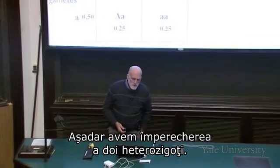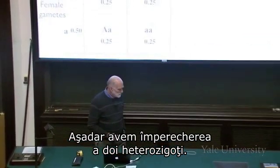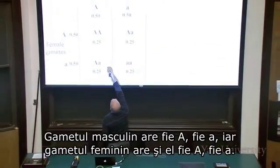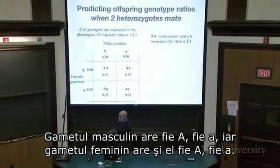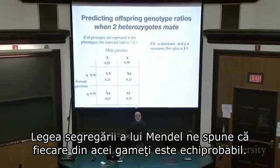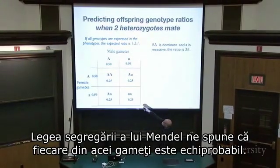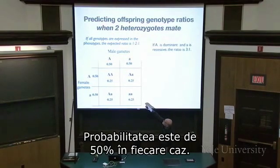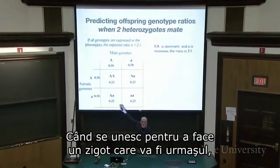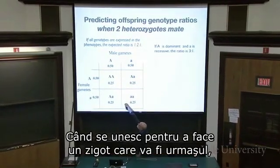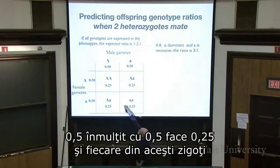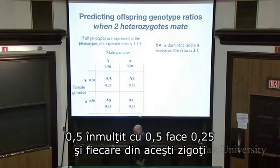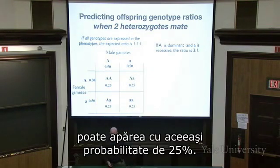If you have two heterozygotes crossing with each other, the male gametes have either big A or little a, and the female gametes have either big A or little a. Mendel's law of segregation tells us those gametes are equally likely — 50% probability in each case. When they come together to make a zygote, we multiply the probabilities: 0.5 times 0.5 gives us 0.25, so each kind of zygote is equally likely at 25%.